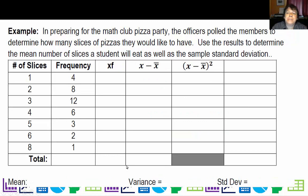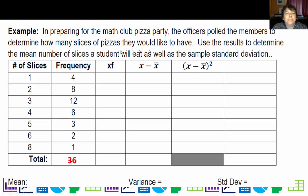Now let's take a look at frequency tables — these work the same way. I have different numbers of slices, which is quantitative data, and their frequencies, which means I have a total of 36 samples. I polled my math club kids for a pizza party and asked how many slices I should order for each of them. So 4 answered 1 slice, 8 answered 2, and 12 answered 3.